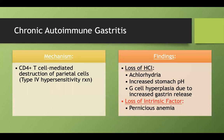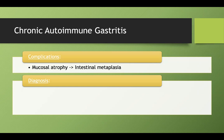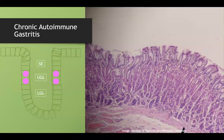Let's talk about complications and how we actually diagnose chronic autoimmune gastritis. A complication is mucosal atrophy — with so much damage and chronic inflammation, you can get intestinal metaplasia. Because of autoimmune damage to the parietal cells and that whole layer, intestinal metaplasia can develop. As we saw from Barrett's esophagus, metaplasia is a precursor to dysplasia and ultimately cancer. So chronic autoimmune gastritis is a risk factor for gastric cancer.